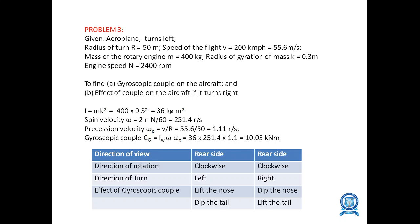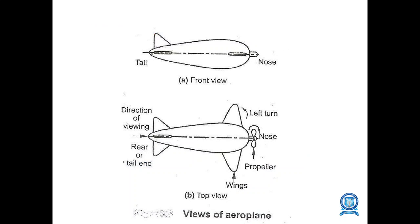From the direction of rotation — clockwise — and direction of turn being left, the effect of the couple is to lift the nose and dip the tail. This is the view diagram for an airplane; draw this alongside the problem.